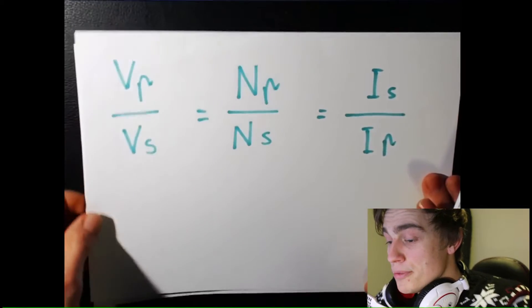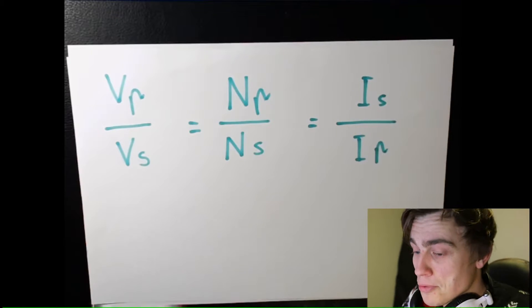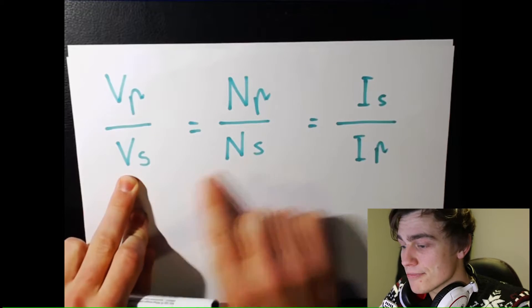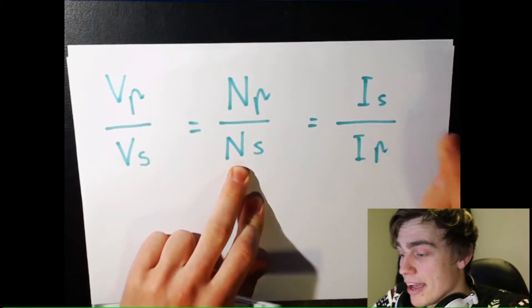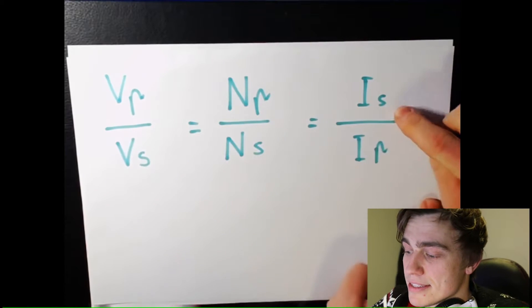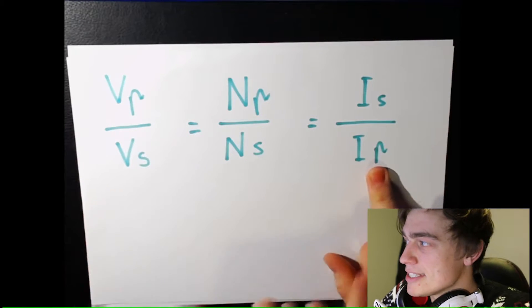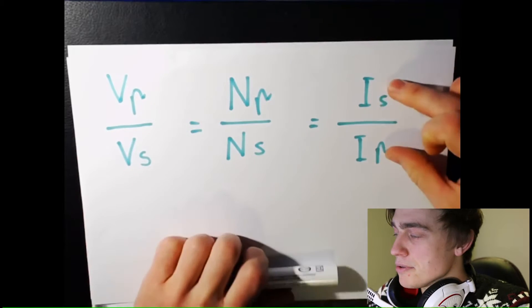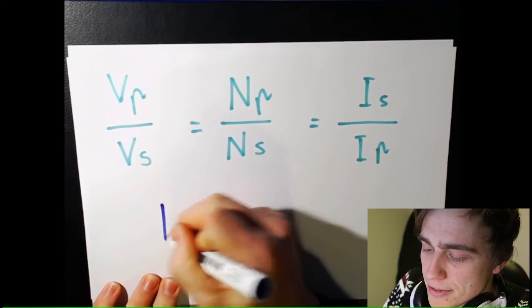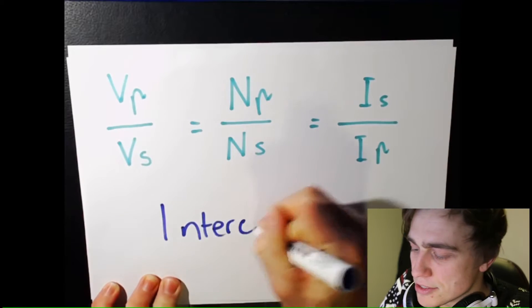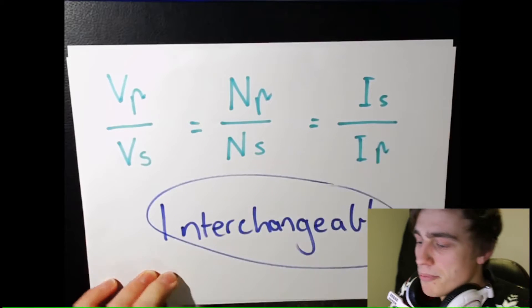Okay. This is to do with transformers. Basically, Vp equals the voltage in the primary winding. Voltage in the secondary winding is Vs. Number of turns in the primary is Np. Number of turns in the secondary winding. And here I've got current, which its symbol is I. So the current in the secondary and the current in the primary. Can we see that they're actually reversed over here? So this is kind of like a ratio. It is interchangeable.